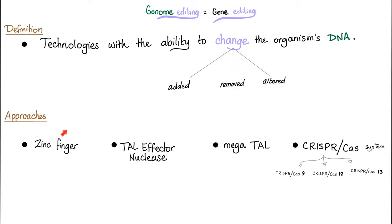What is the approach? We have several approaches: we can use zinc finger, TAL effector nuclease, we have mega TAL, and the famous CRISPR-Cas system. We have three: CRISPR-Cas9, CRISPR-Cas12, and CRISPR-Cas13.